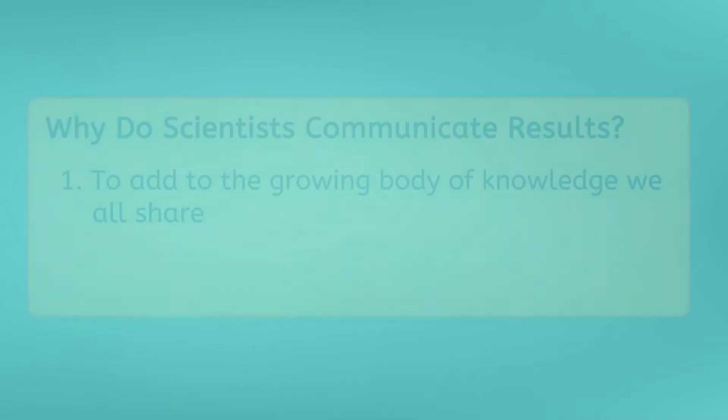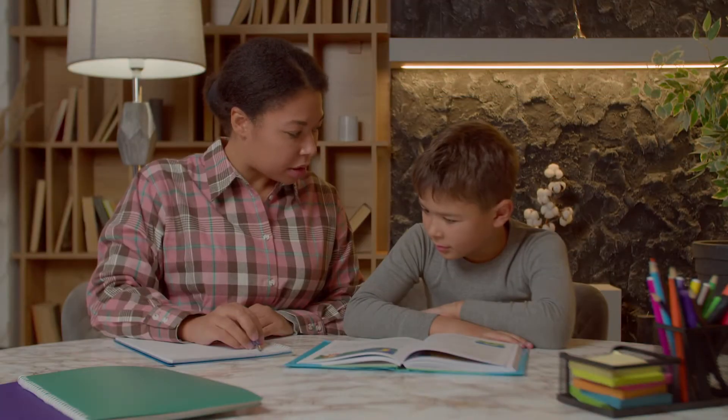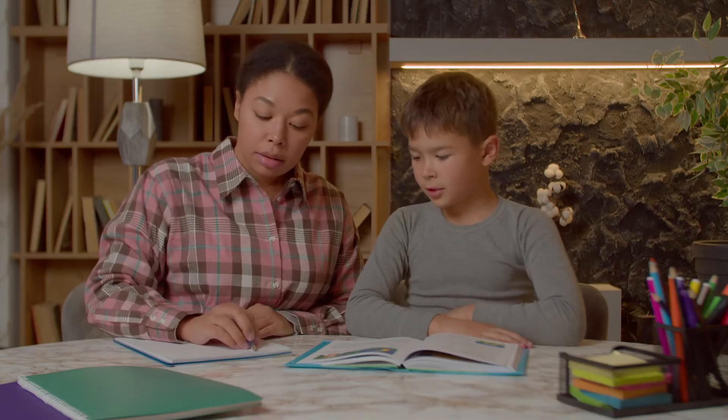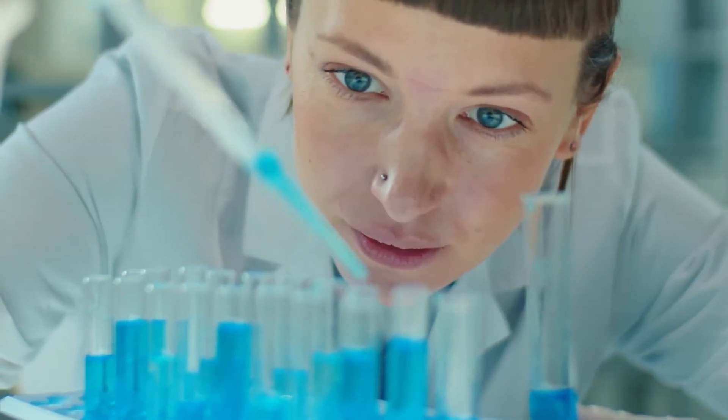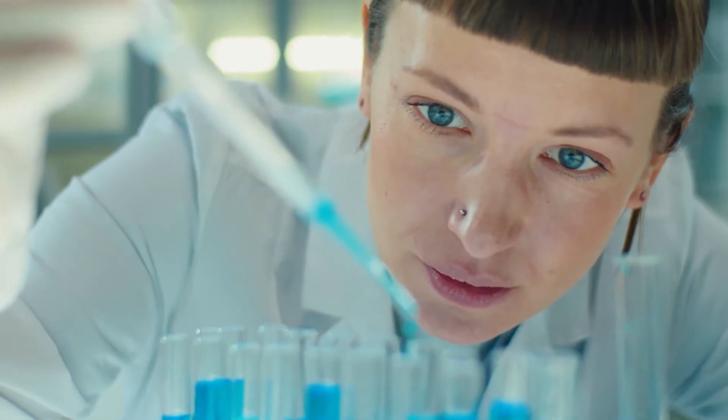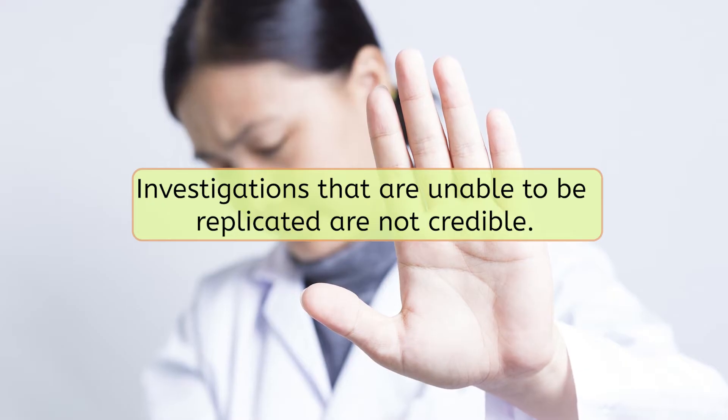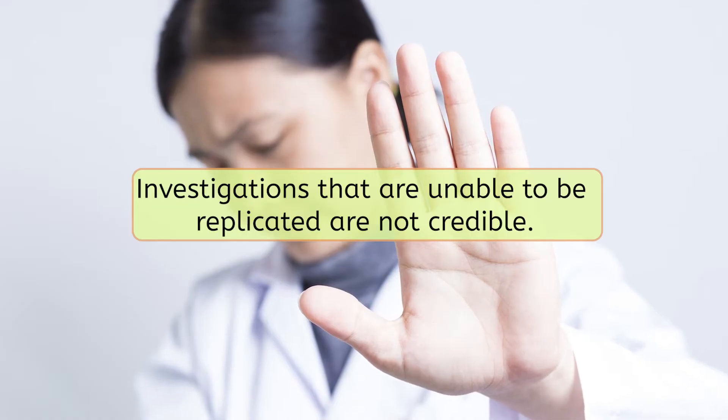That's pretty awesome, but how can scientists be sure that their results are correct? Do scientists just take each other's word for it? No, not at all. The second reason scientists communicate their findings is so that other scientists can double-check their work. Scientists do that by replicating each other's investigations to see if they get the same results. Investigations that are unable to be replicated are not seen as credible, or believable, by the scientific community.